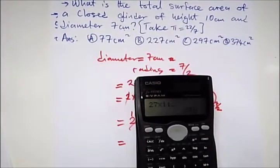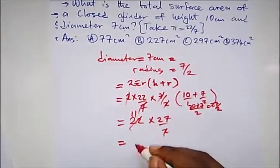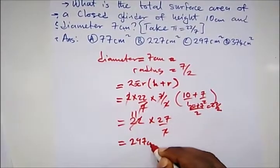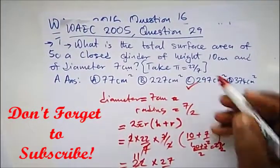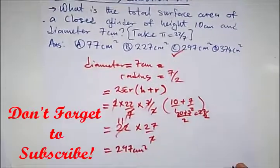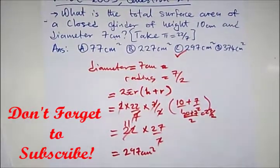297 centimeters squared, and our right option is option C. Thank you for staying tuned to Destined to Win Tutorial. See you in our next video. You are destined to win. Please like, share, and subscribe to this channel. You are destined to win. Bye.